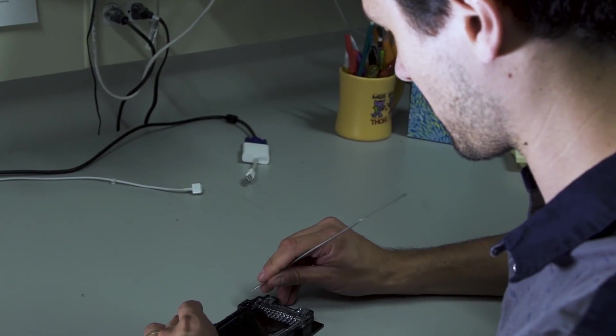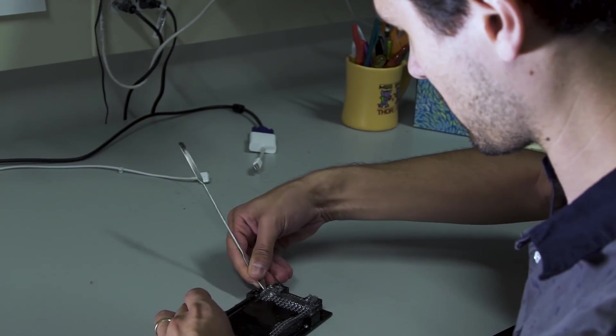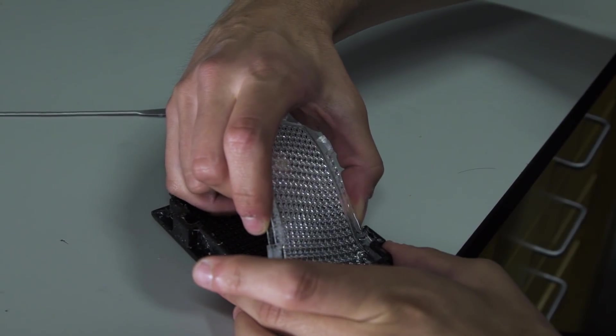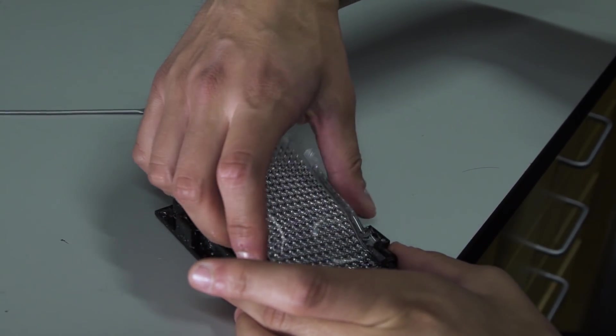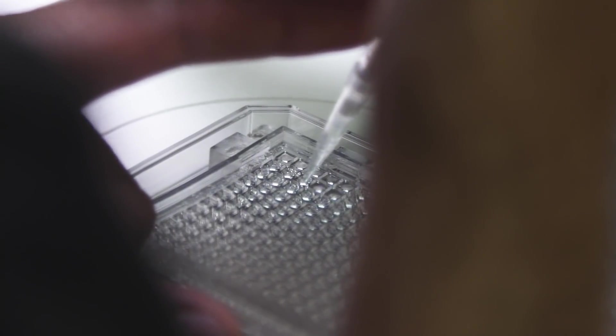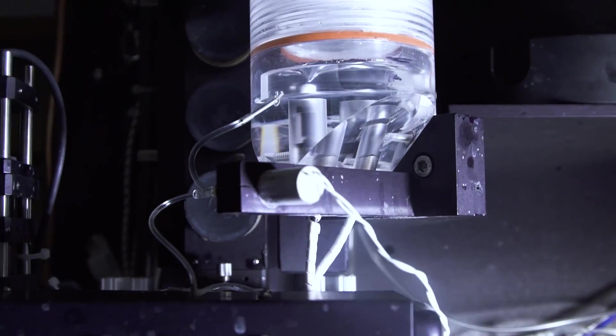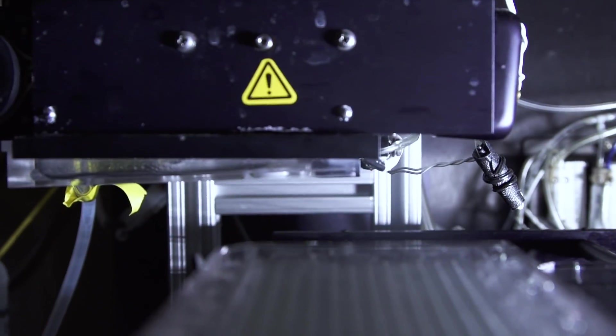We ended up creating a 3D printed mold, and then we can easily cast Worm Motels with silicone rubber. We add agar to each well, then add bacteria on top of the agar, and then we have a device that automatically shoots a single animal into each well.